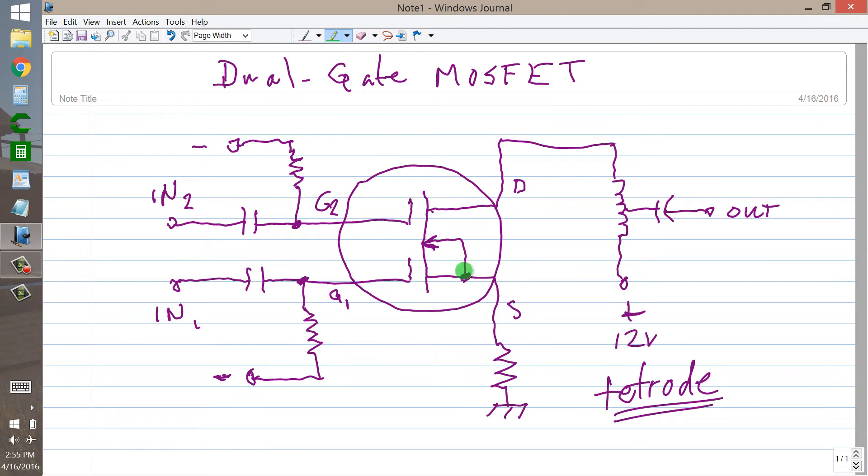One, the source. Two, the first gate. Three, the second gate. And four, the drain. When you do this kind of circuit arrangement, you have an amplifier with two different inputs. And when you have an amplifier with two different inputs, you can input two different signals to that amplifier and get a mixer.